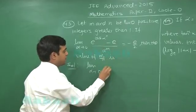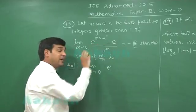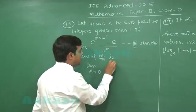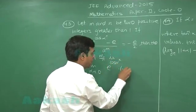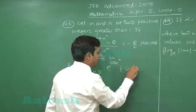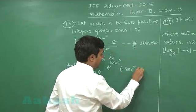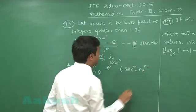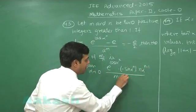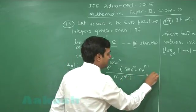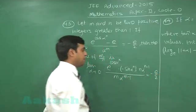So, it gives me on differentiating numerator and denominator separately: e to the power cos alpha n into minus sin alpha n into n alpha n minus 1 divided by m alpha m minus 1 is equal to minus e by 2.